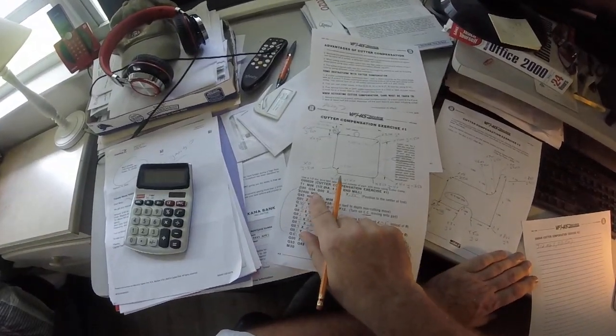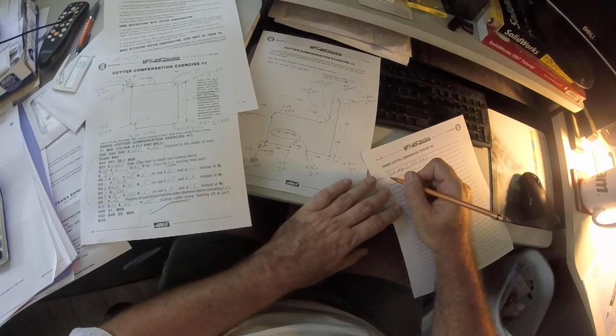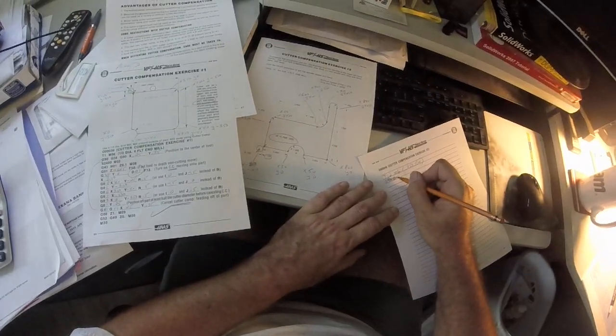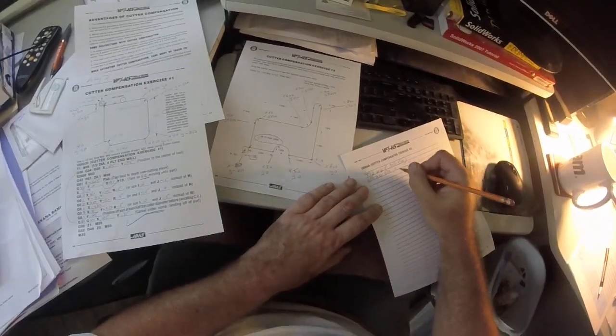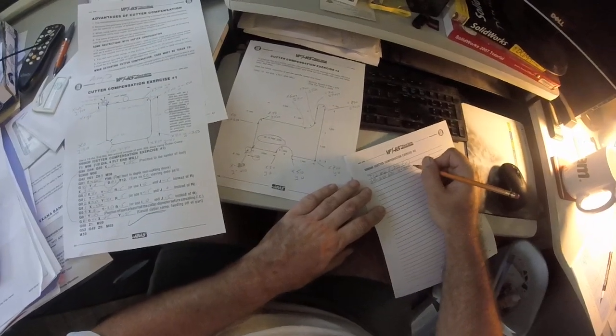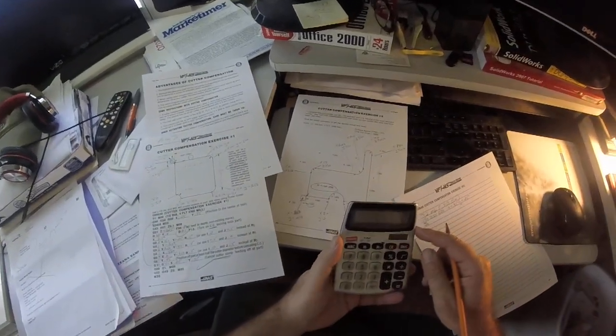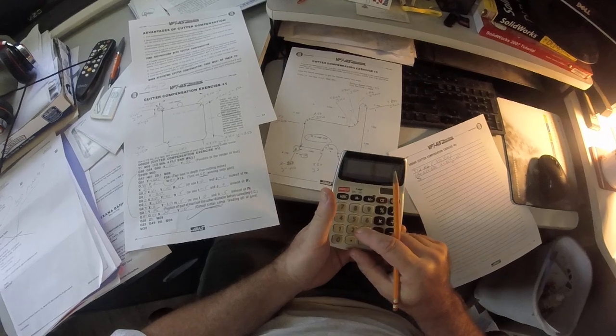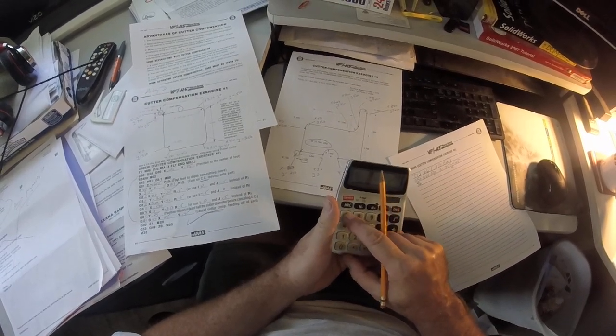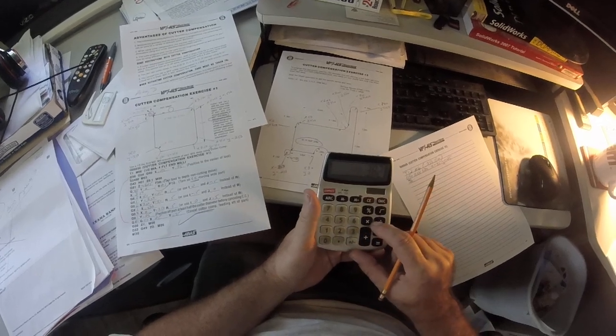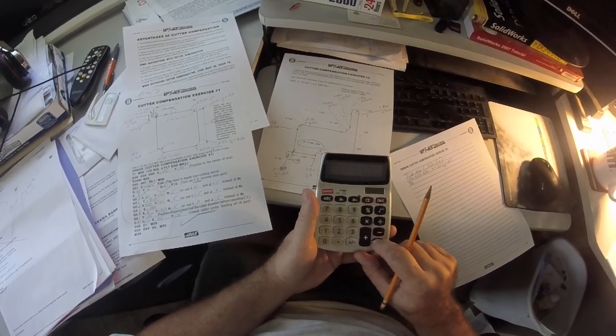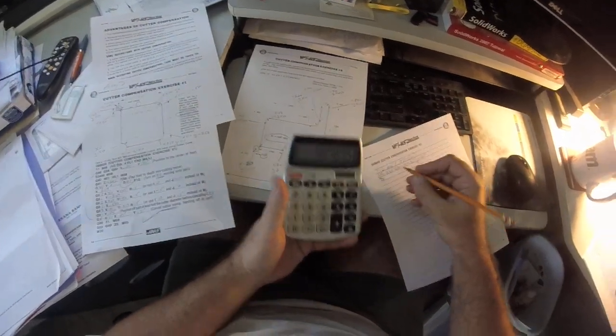So that would be, this first one is a move. I'm just going to copy this right down. G90, G54, G00, X minus .35 and Y minus .25. Okay, now I'm going to turn the spindle on. To do surface speed per minute, that's 275 times 3.82 times .75 equals 787 RPM. Like a roundup. Not that important.